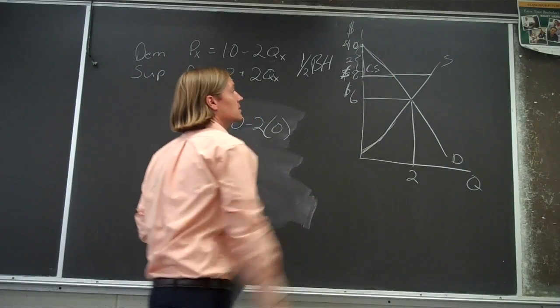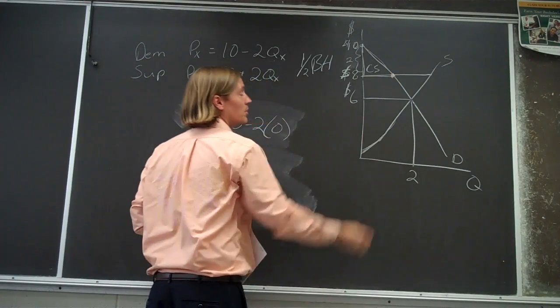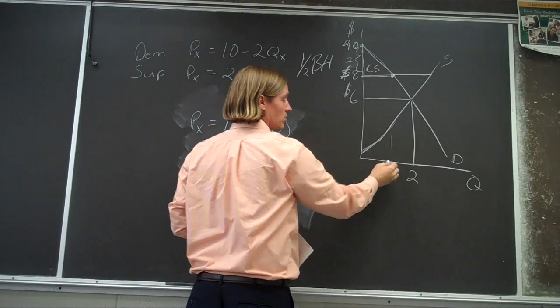Now we need the base. How are we going to figure that out? Well, what do we know about this point? We know that the price is 8. But we don't know what the quantity is.